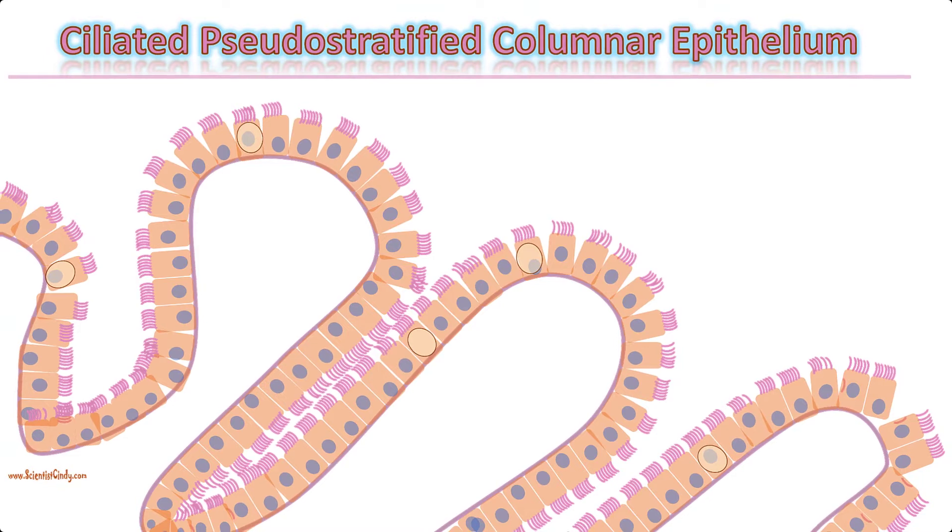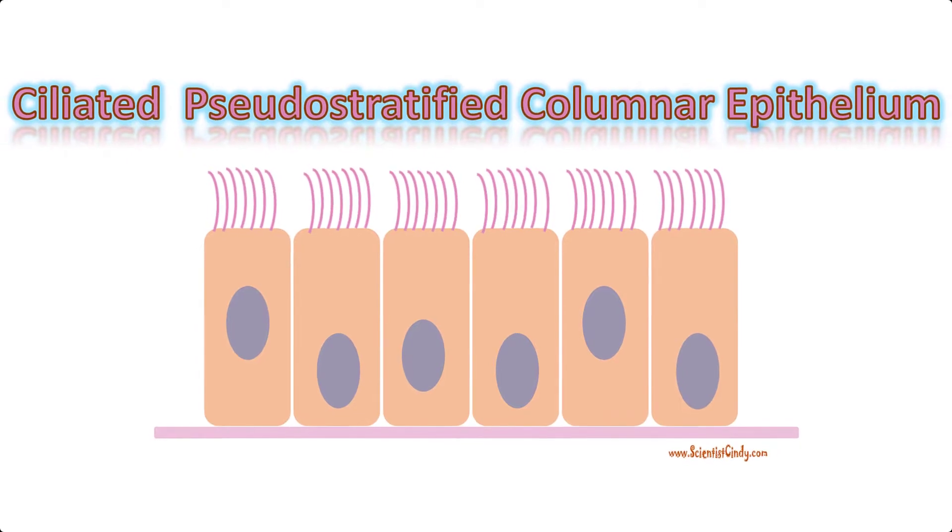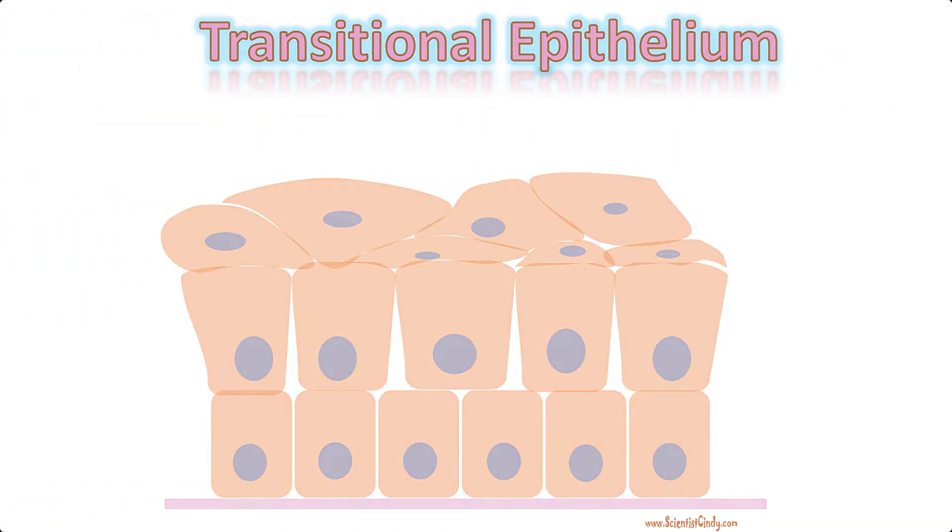There is also pseudostratified tissue, which describes tissue with a single layer that deceivingly gives the appearance of more than one layer. Transitional epithelium describes forms of specialized stratified epithelium in which the shape of the cells vary.